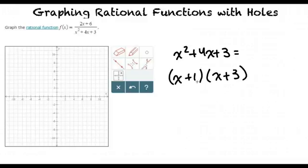Since x squared plus 4x plus 3, which is the denominator, is equal to (x plus 1) times (x plus 3) through factoring it,